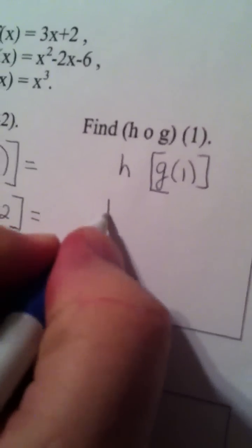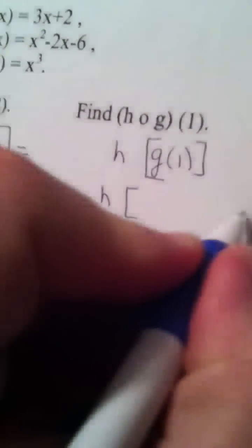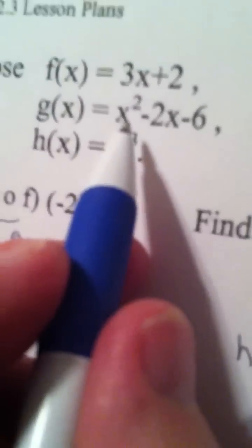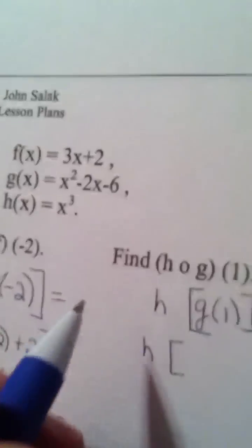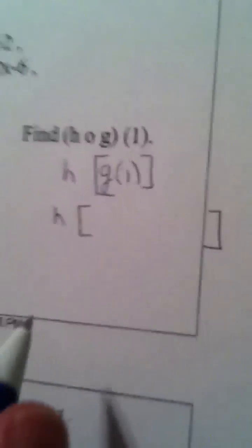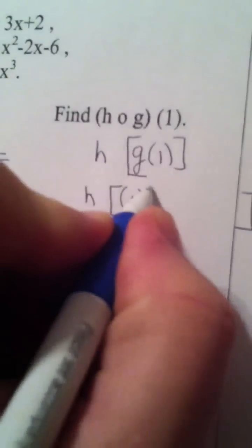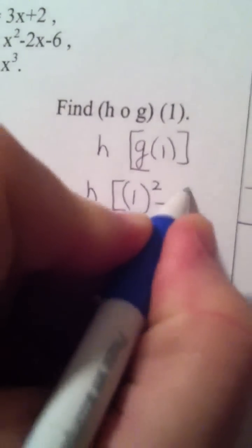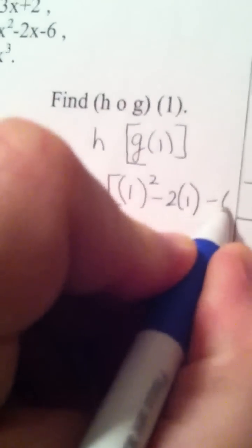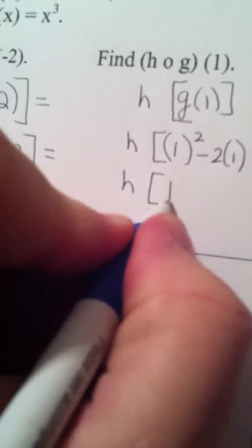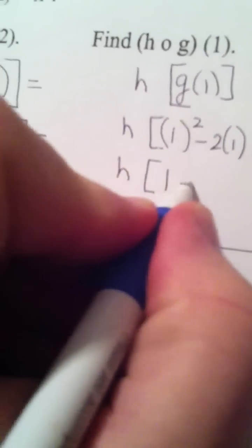So leave h alone for a minute. g of 1. We go back to function g, and every place I see an x, I put in a 1. So I have 1 squared minus 2 times 1 minus 6. That becomes 1 minus 2 minus 6.